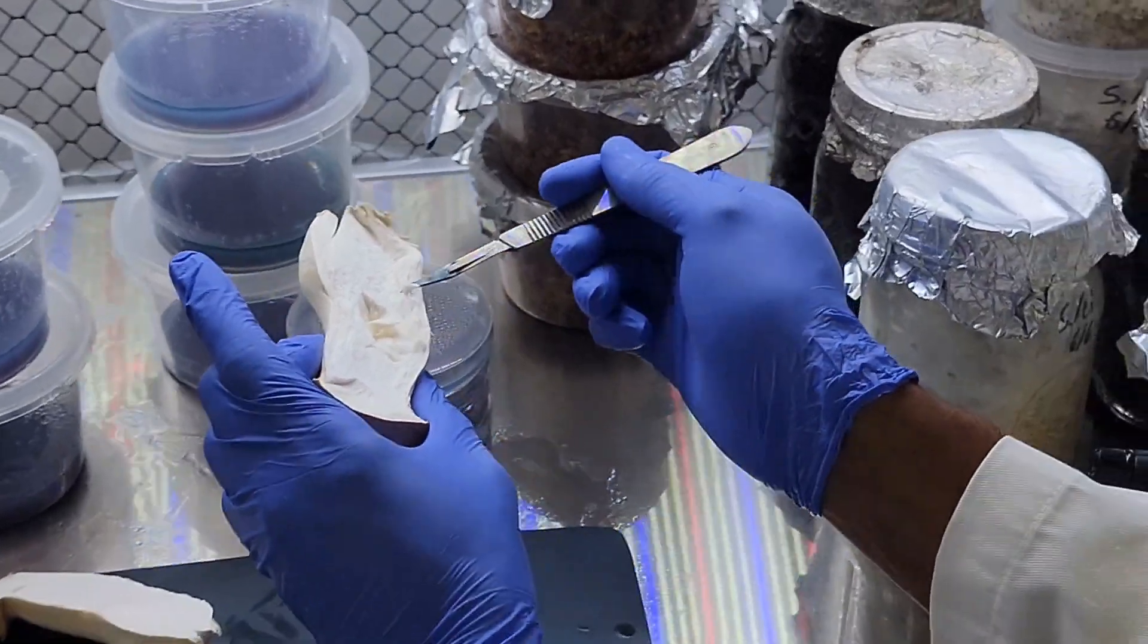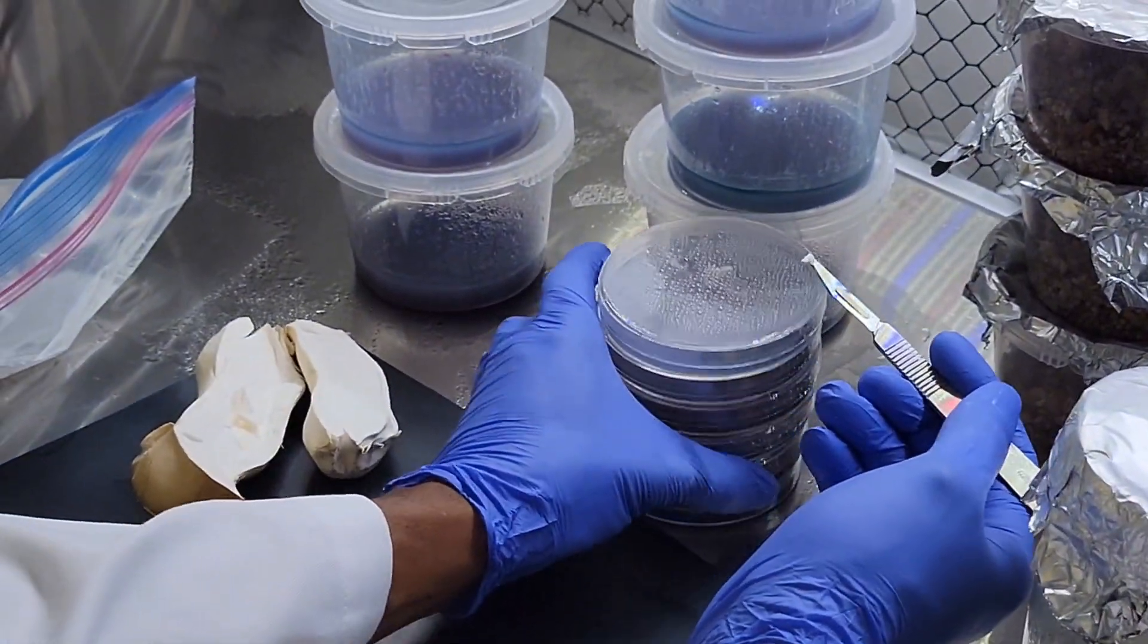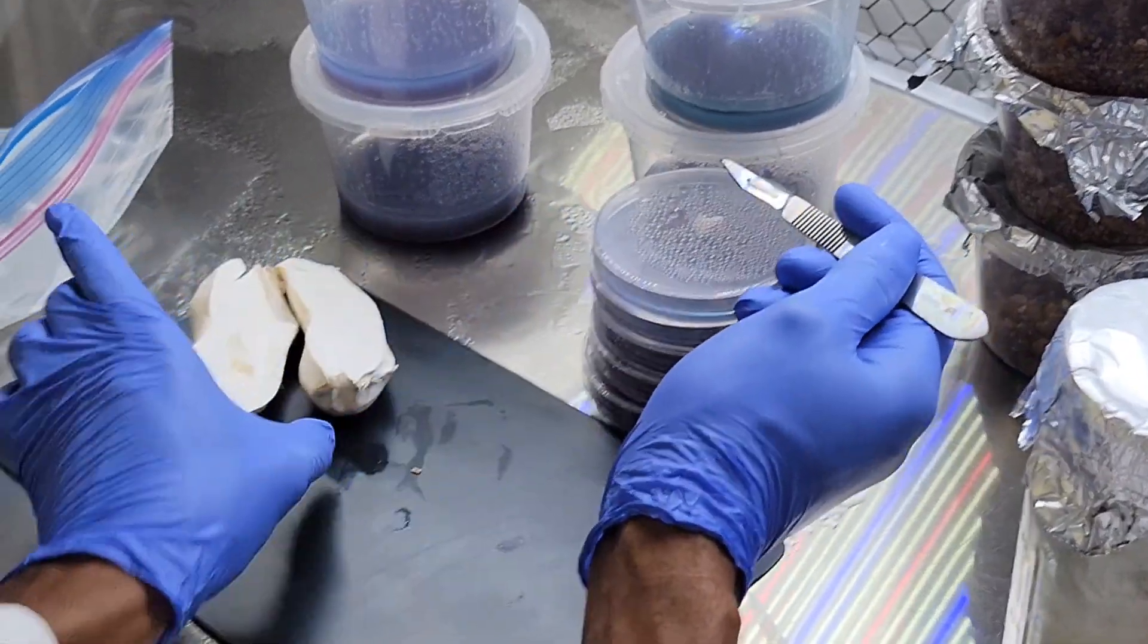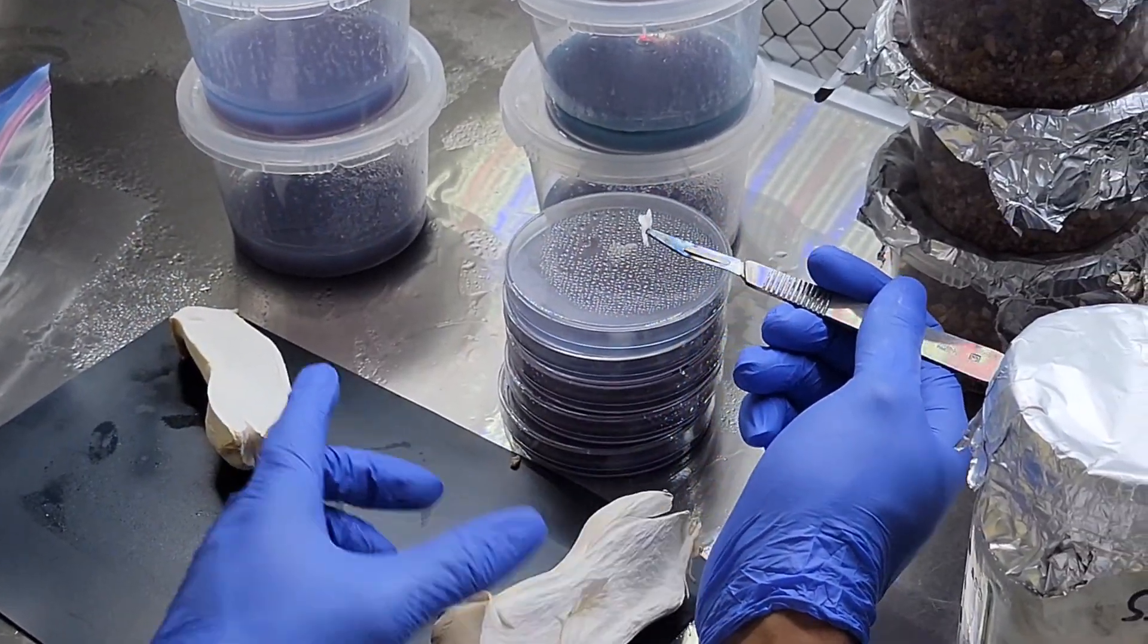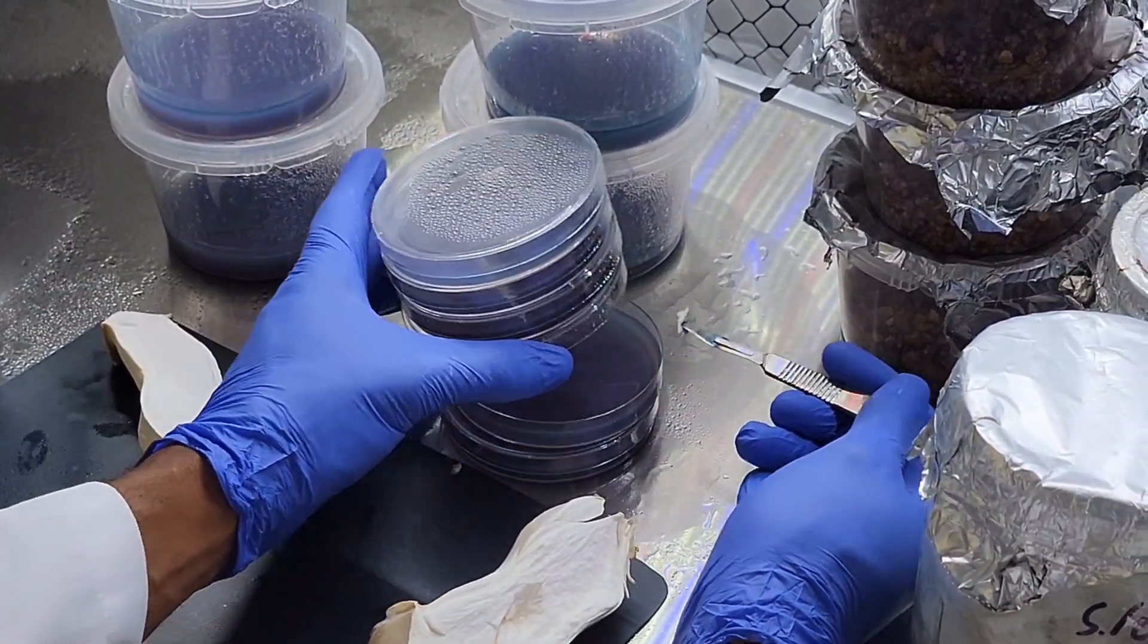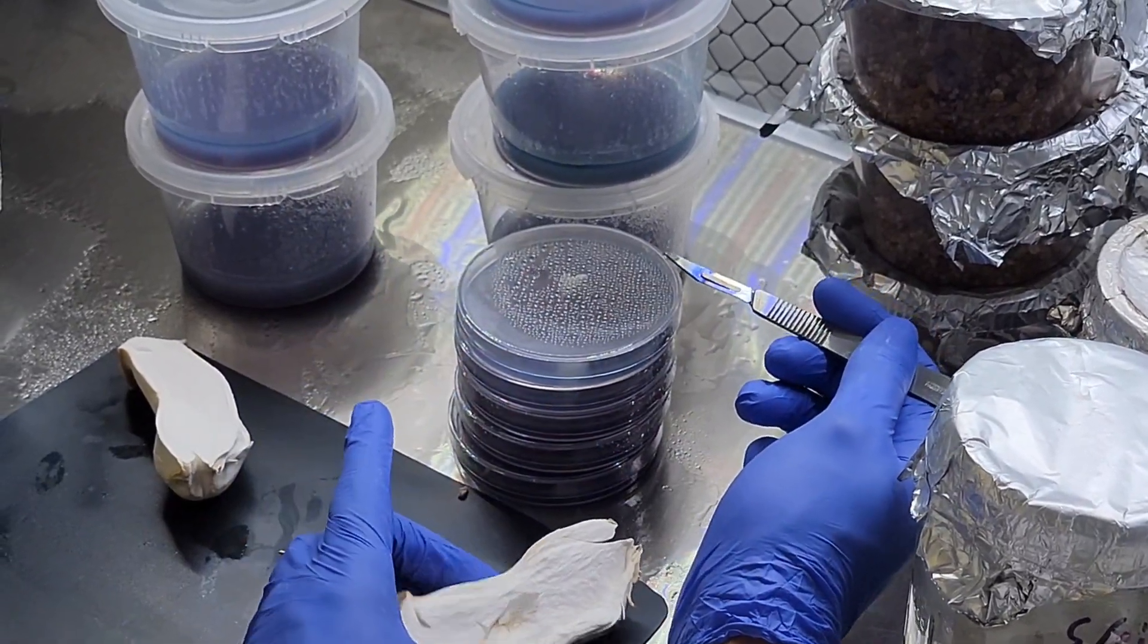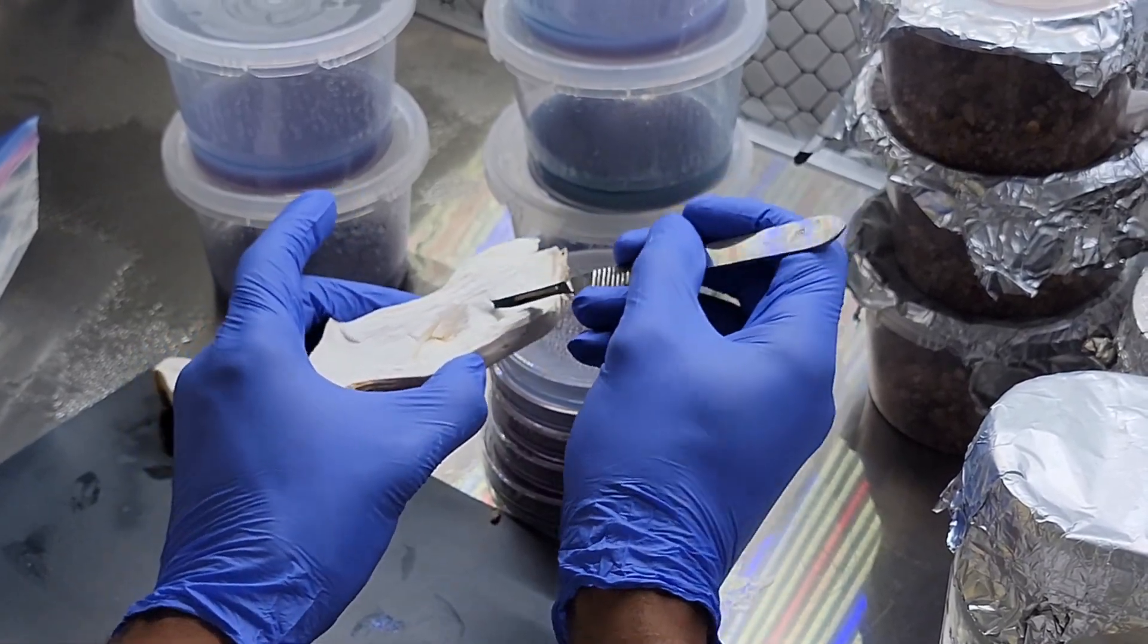You'll just transfer out anything that you identify as mycelium coming from the sample away from whatever else may be growing on the plate, and you'll do that over and over again until you have a fully clean plate. And that's when you can either slant away your specimen for later or move it to grain.